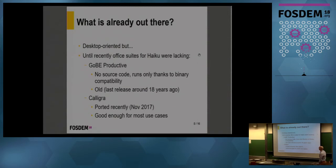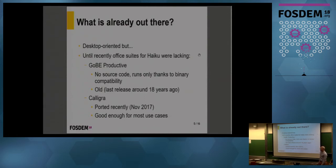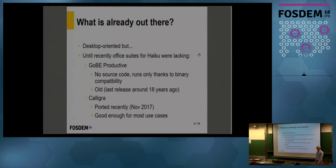What is already out there? The problem is that Haiku prides itself on being desktop-oriented, but there isn't really an office suite for it — so that's a problem. Until very recently, we didn't really have any office suite. There is GoBe Productive, but the problem is that it was commercial, proprietary, and closed source, and we don't have the source code. It runs on Haiku only thanks to binary compatibility, and it's really old — the last release was around 18 years ago — so it doesn't support any of the modern formats.